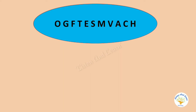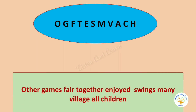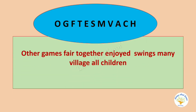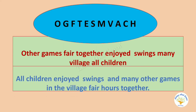Then a longer sentence using letters O, G, F, T, E, S, M, V, A, C, H — words beginning with these letters: other, games, fair, together, enjoyed, swings, many, village, all, children. Rearrange all these words and make a meaningful logical sentence: 'All children enjoyed swings and many other games in the village fair, hours together.' Go on taking different letters, then words beginning with the same letters, and frame sentences.